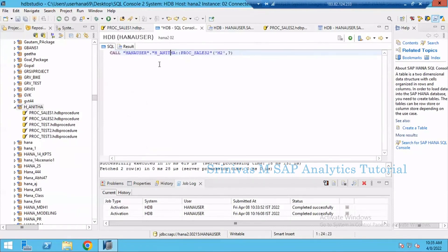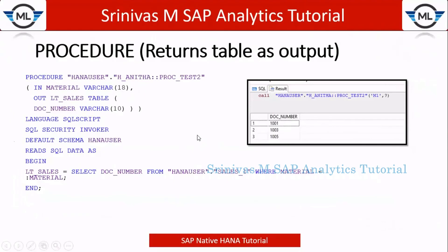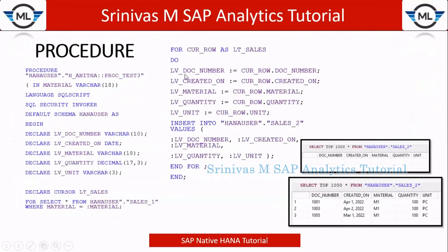This is how we create a procedure which returns a table as output, and how to call it from a SQL command prompt for testing. In our next session we are going to learn something more advanced — how to update a database table with data using a procedure. The example will involve creating a new empty table and writing data into it using a procedure. Closing the session for now.